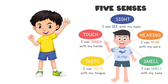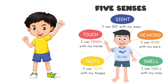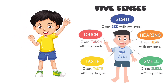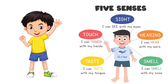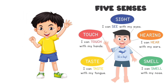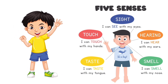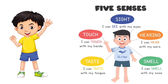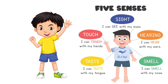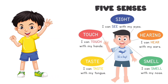Now repeat. Sight — I can see with my eyes. Hearing — I can hear with my ears. Smell — I can smell with my nose. Taste — I can taste with my tongue. Touch — I can touch with my hands.